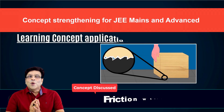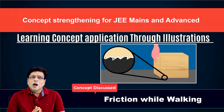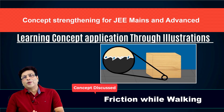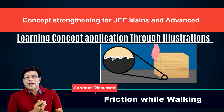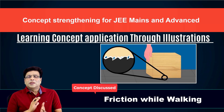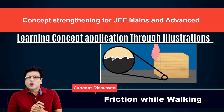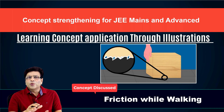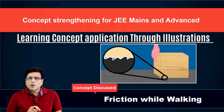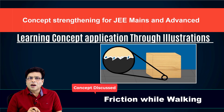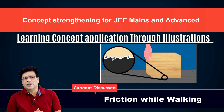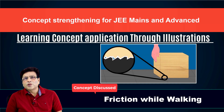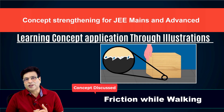Dear students, when we walk on a surface, our foot does not slide with respect to the surface. That means friction cannot be kinetic in nature. The nature of friction is kinetic only when there is relative sliding between two surfaces. But if we move, run, or walk on a surface, our foot does not slip or slide. If we don't have relative sliding, friction cannot be kinetic in nature.